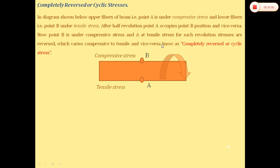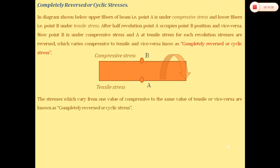Such stresses are known as completely reversed or cyclic stresses — compression to tension, tension to compression, with the same magnitude. The stresses which vary from one value of compressive to the same value of tensile (or vice versa) are called completely reversed or cyclic stresses. This is the load type we are analyzing for fatigue failure.